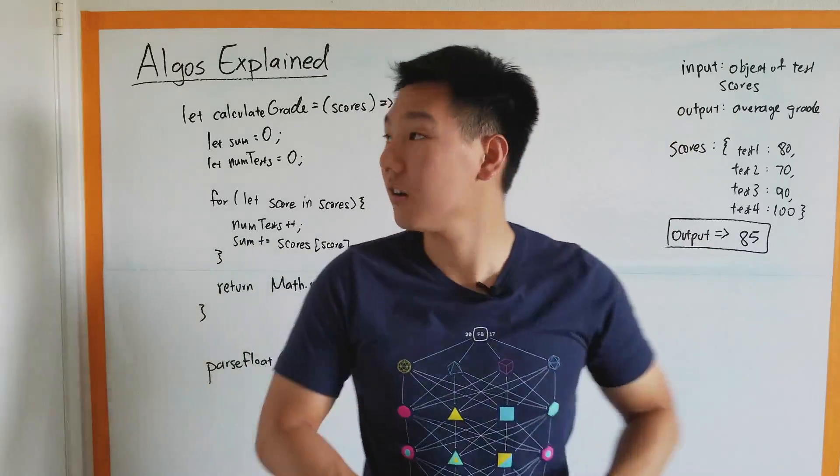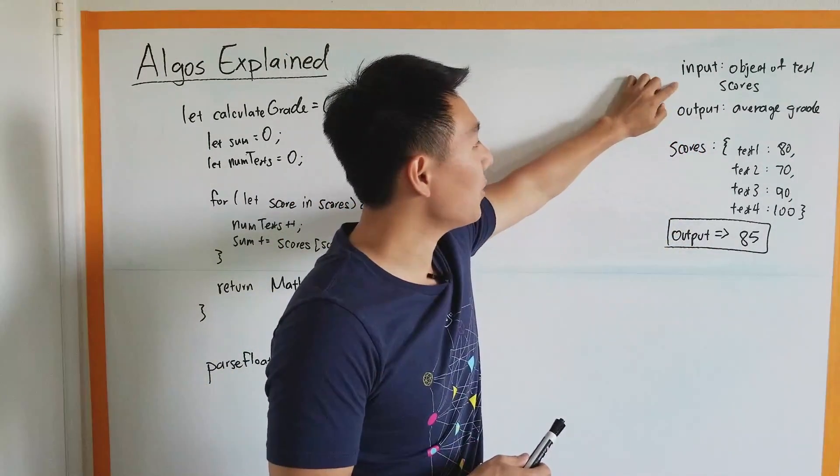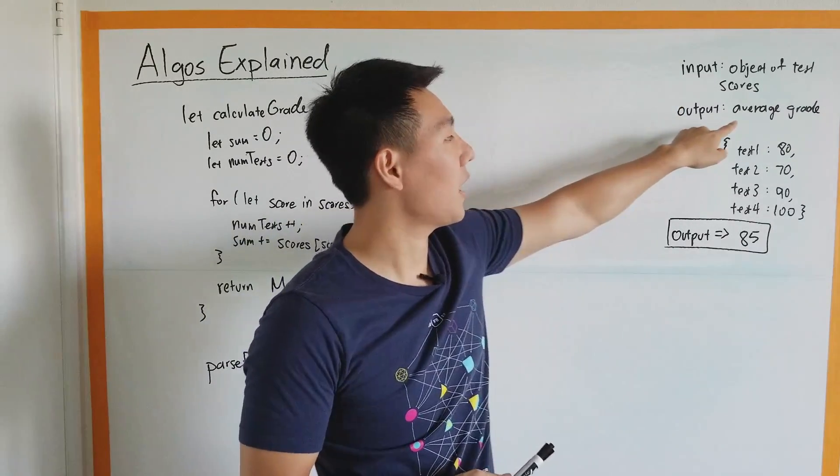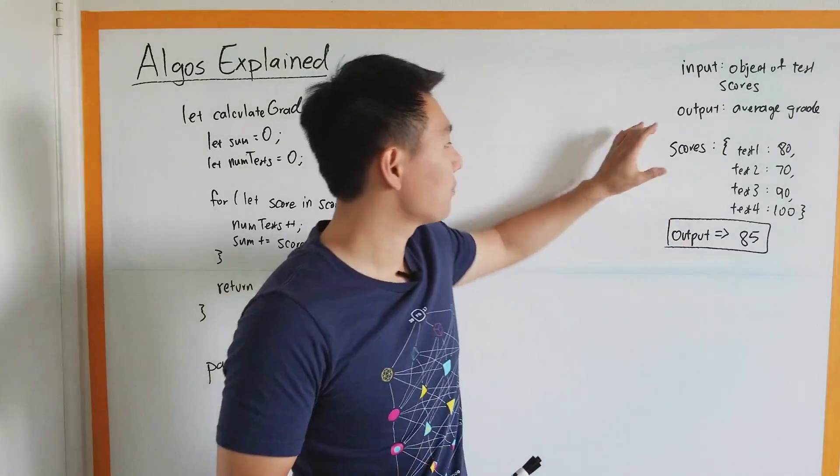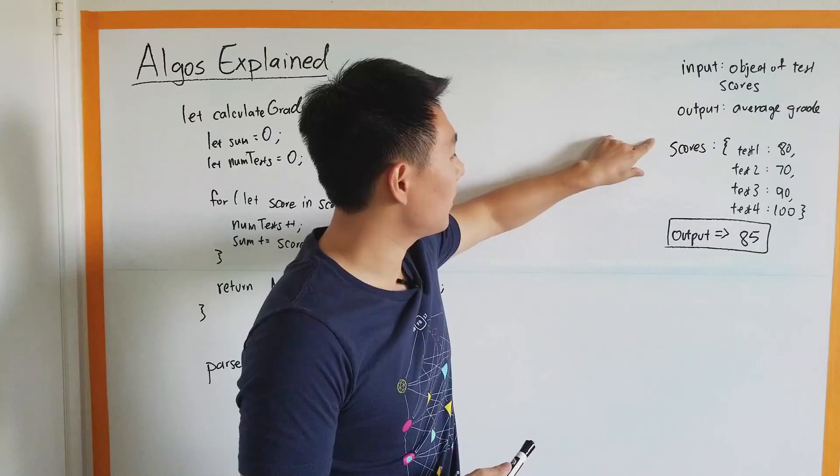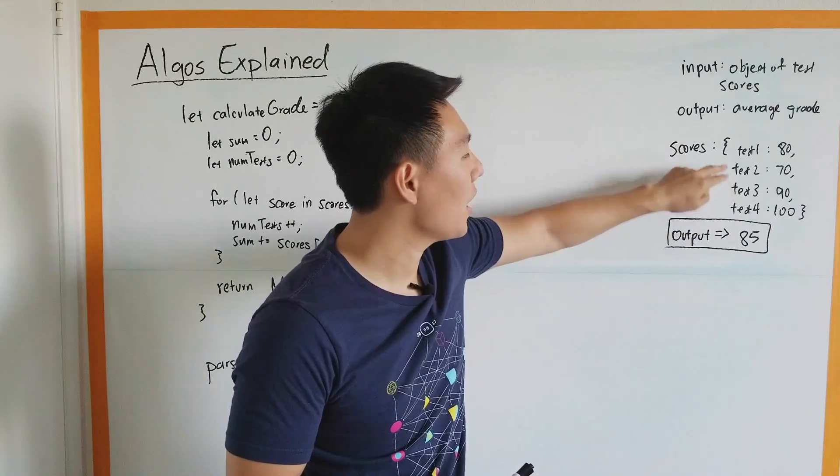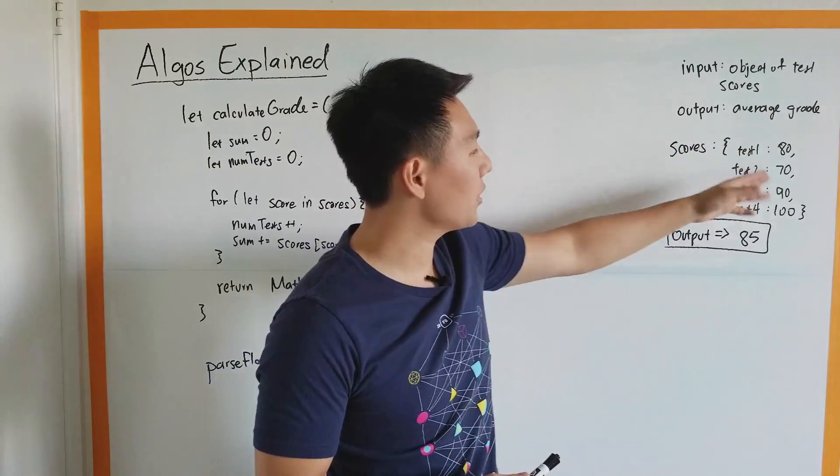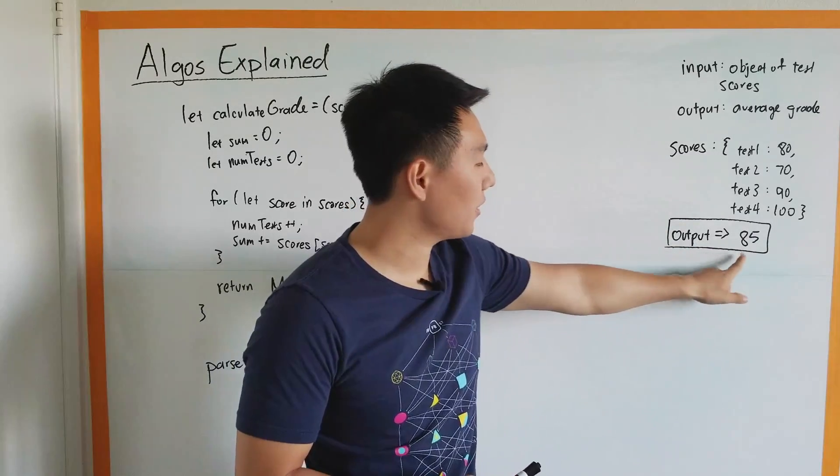This question we're going to call it Calculate Grade. The input is going to be an object of test scores, and the output is going to be the average grade. For the example, you always want to ask for an example if they don't provide it for you. A sample input looks like this: test one, test two, test three, test four. These don't really matter what it says over here. We just really care about the scores and how many there are.